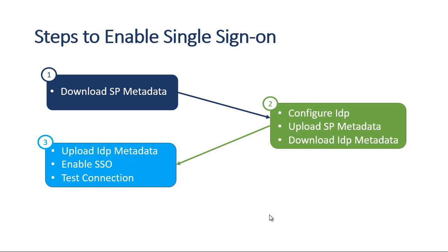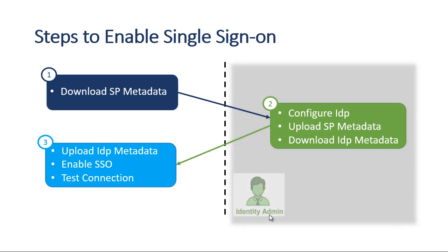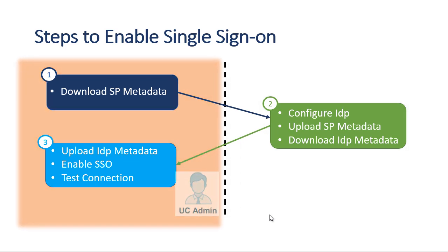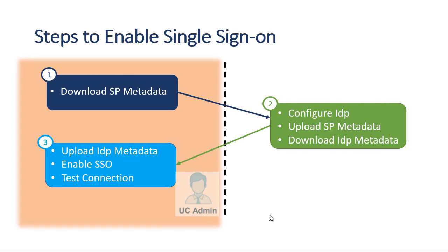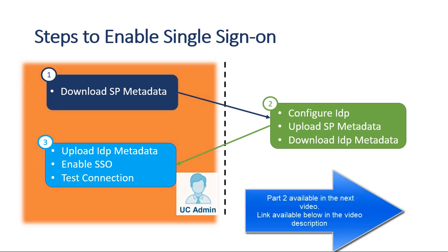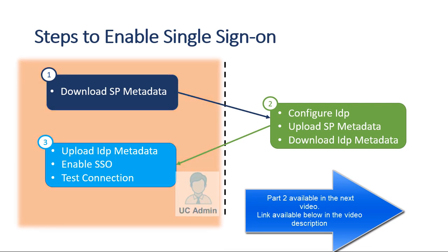Before we start, let's understand who configures what. Step two — configuring the IDP, uploading the service provider metadata, and downloading the metadata from Azure — needs to be done by your Azure admin or identity admin in your organization. Step one and step three need to be done by the UC admin — that's you. You export the metadata from CUCM and send it to the identity admin, and they send you back the Azure metadata, which you upload in step three to enable single sign-on and test the connection.